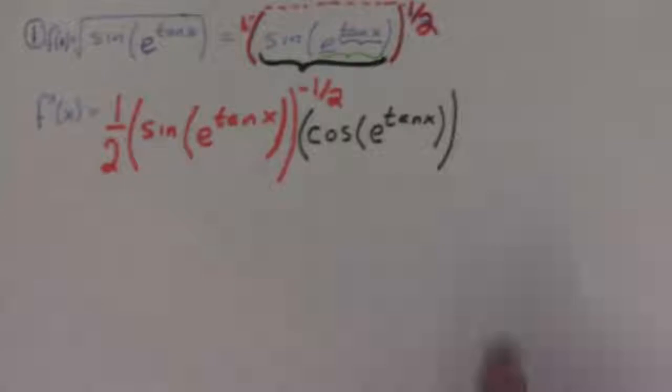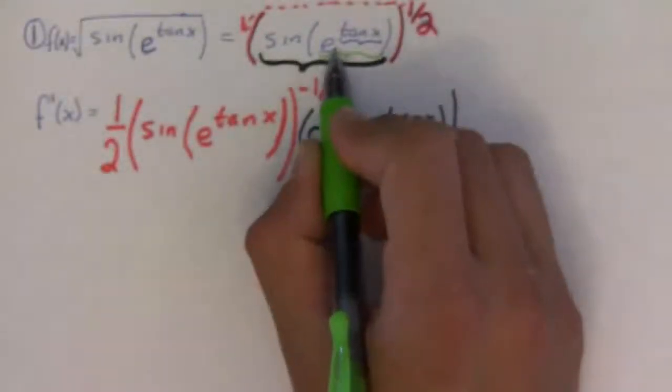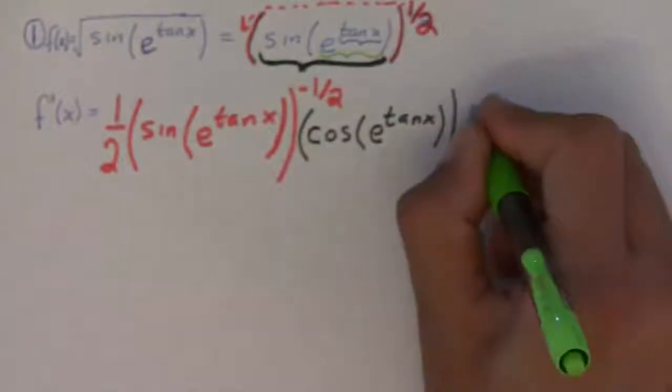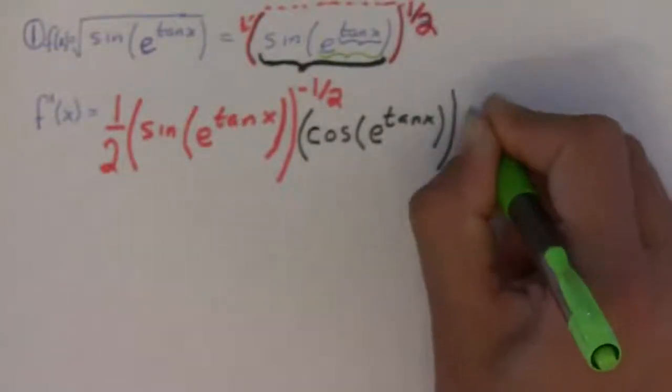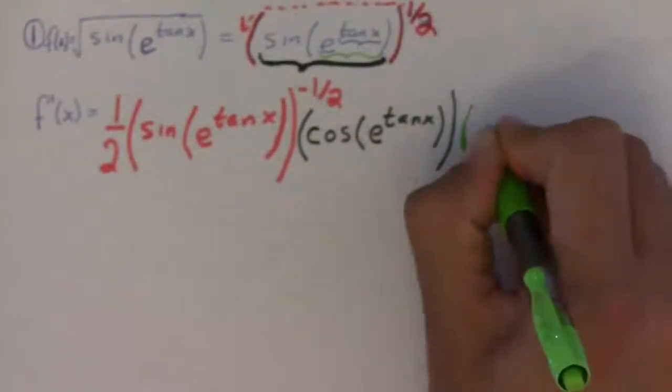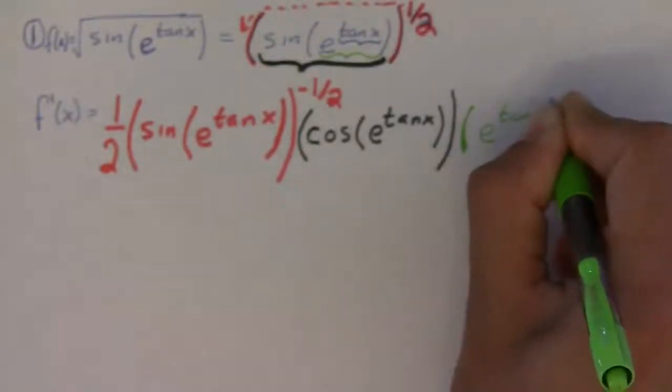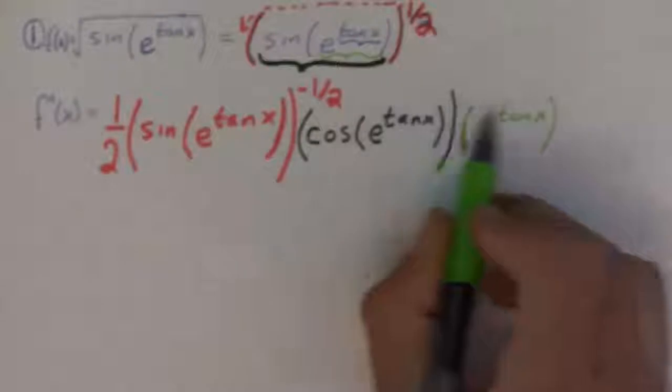Okay. And then you go in one more level. And you have the derivative of e to the tangent of x. Well, the derivative of e, the natural exponential, is just itself. So, you have e to the tangent of x. Because you leave the inside alone.